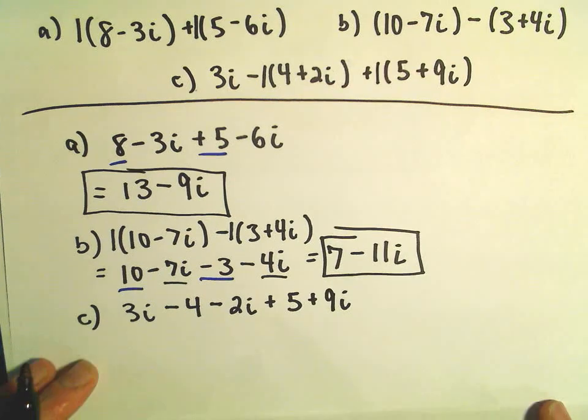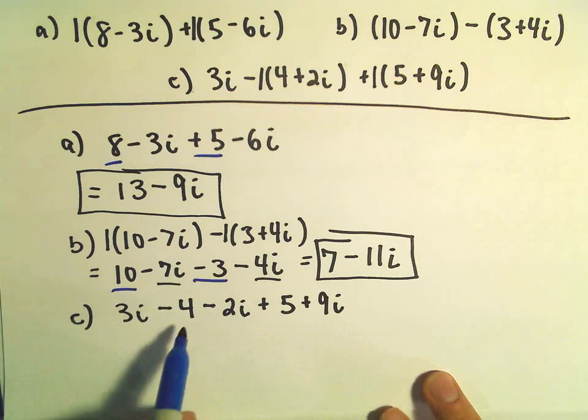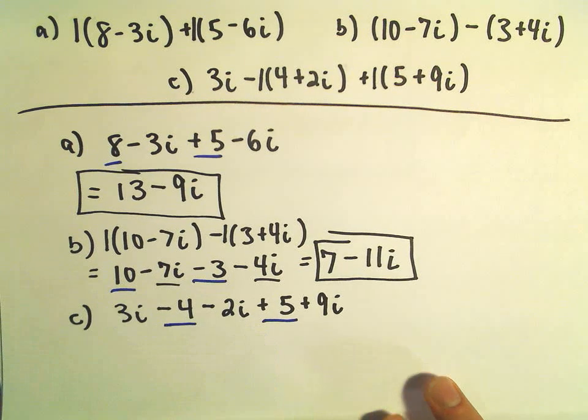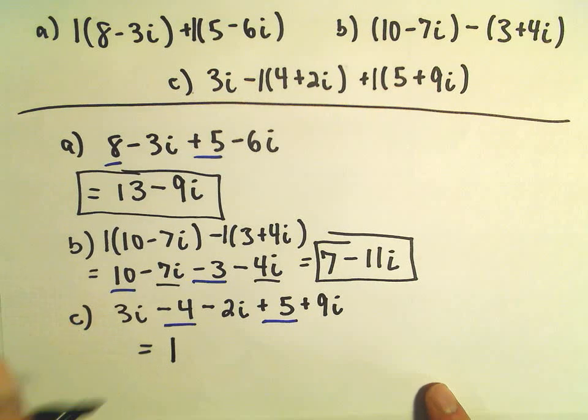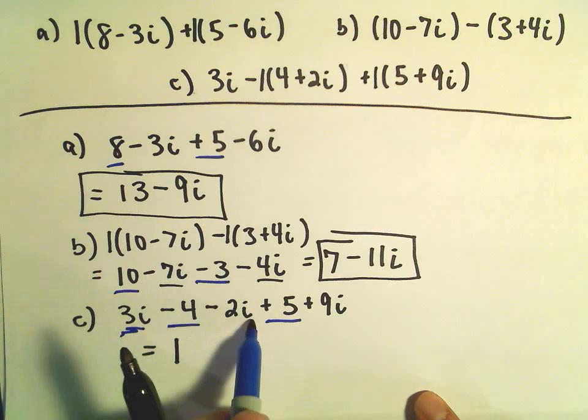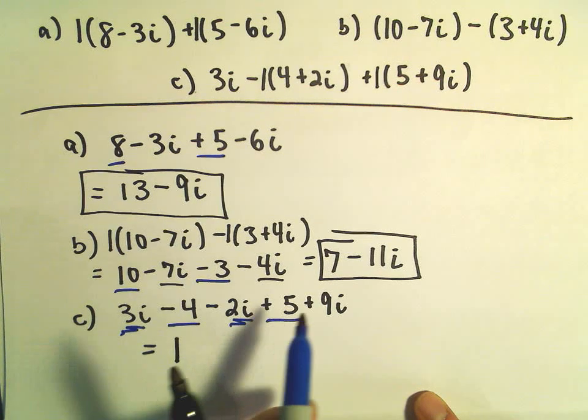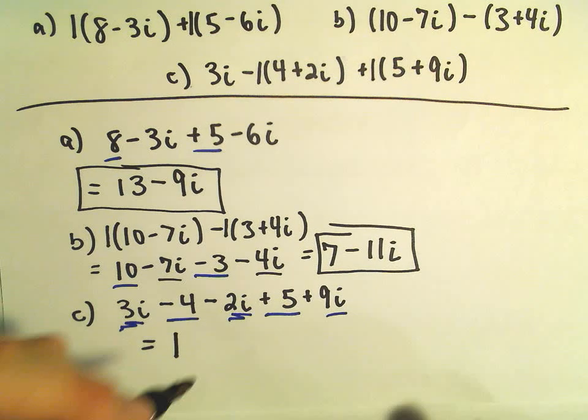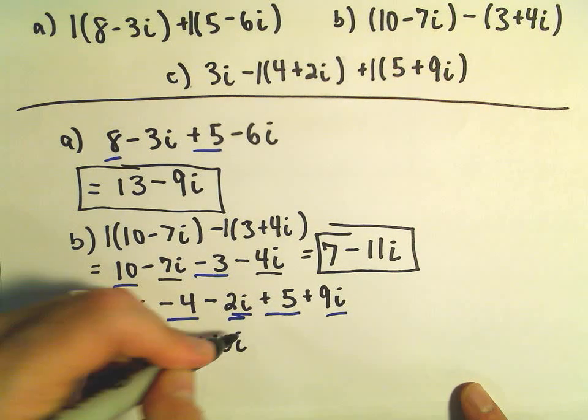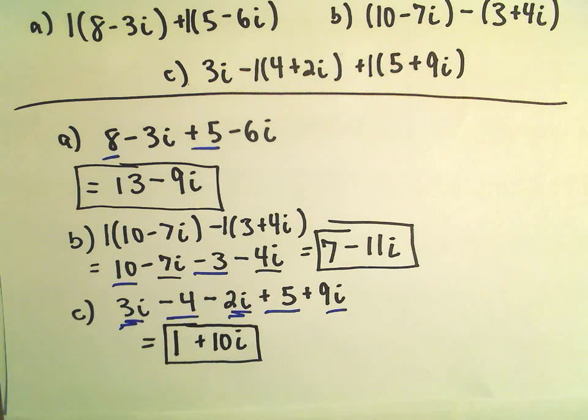And again, now we're simply combining all of our like terms. I do the real parts first. So I see a negative 4 and a positive 5. Negative 4 plus 5 is going to leave me with a positive 1. And then if we do 3i minus 2i, that will give us 1i. And then 1i plus 9i will leave us with a positive 10i. And we have now simplified our third expression.